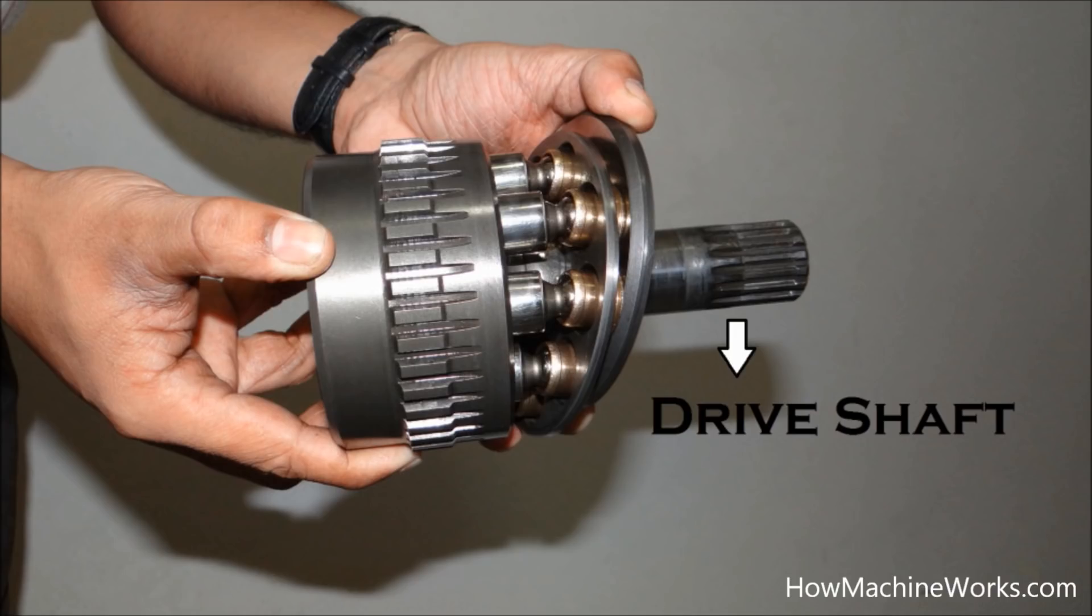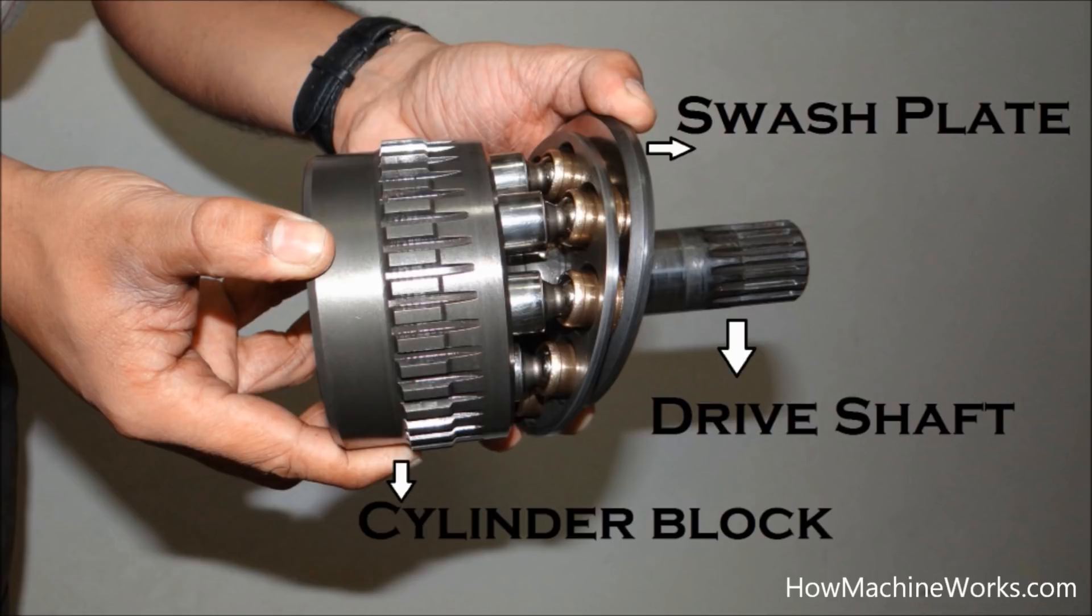That's the drive shaft which is a part of the cylinder itself. The drive shaft gives drive towards the cylinder. And that's the swash plate which the pistons are resting and sliding over. The swash plate angle changes, the flow varies. That's our cylinder block in which we have the pistons arranged.